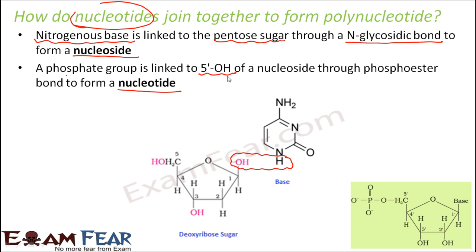Now first of all, where is this 5' OH? As per the rules of nomenclature in chemistry, the carbon atoms are numbered. Here the carbon atoms are numbered 1, 2, 3, 4, 5. There is one OH attached to carbon 1 — that was used during condensation for the formation of the glycosidic bond. There is another OH at the 3' position, and another OH at the 5' position of the carbon atom — that is the 5' OH.